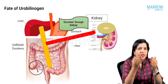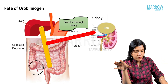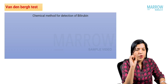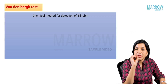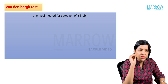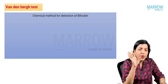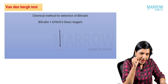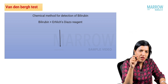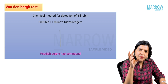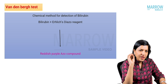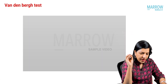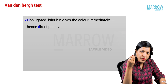The most important disease associated with heme catabolism is jaundice. To estimate serum bilirubin, we use the Van den Bergh reaction. In this reaction, when bilirubin reacts with Ehrlich's diazo reagent, a reddish-purple azo compound is formed.